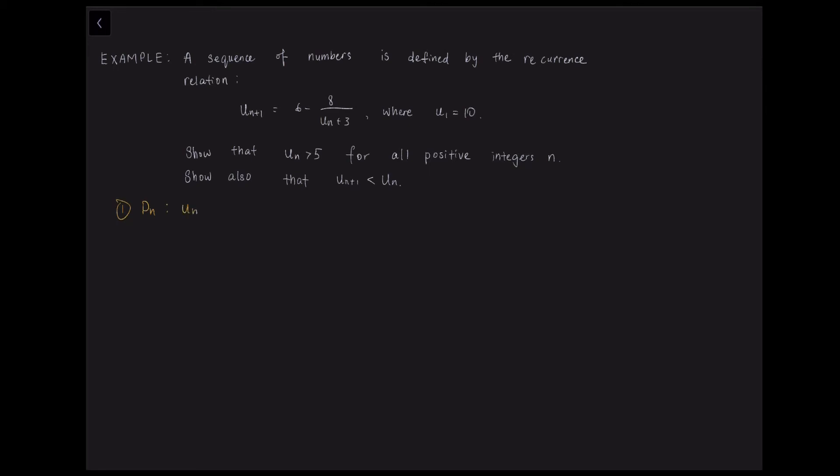So let us start with the first statement, pn. So pn, which is un is larger than 5 for some positive integer n. And then we try n equals 1.